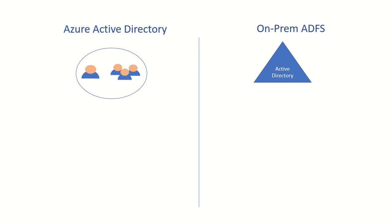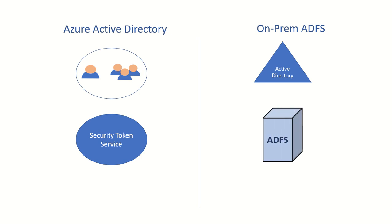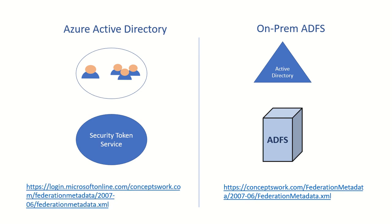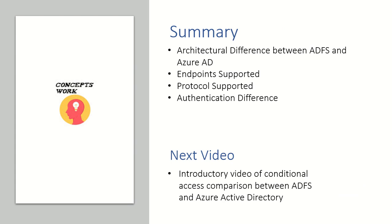In summary, both ADFS and Azure Active Directory offer directory services. In Azure Active Directory we have a dedicated STS instance bound to every directory, whereas on-prem the claim-based identity was handled by ADFS. We covered the architectural differences between ADFS and AAD, the endpoints and protocols supported, and how authentication worked in ADFS compared to Azure Active Directory using common and dedicated STS instances. In the next video I'll talk about conditional access — an introductory comparison of how it was calculated in ADFS versus how it works in Azure Active Directory.